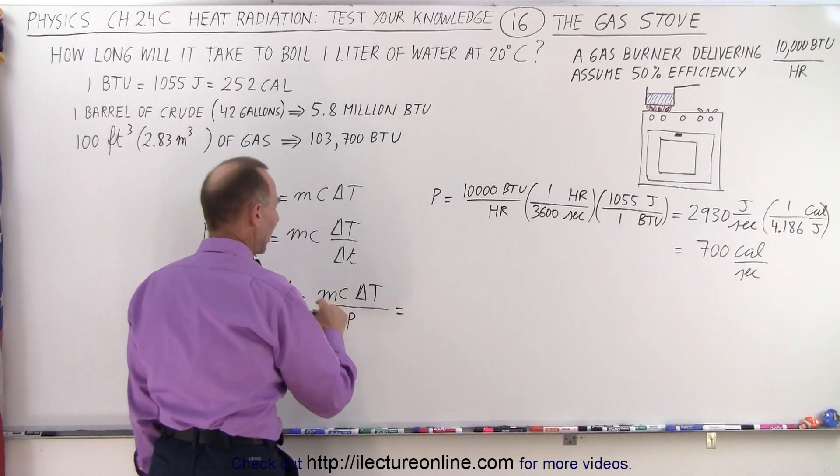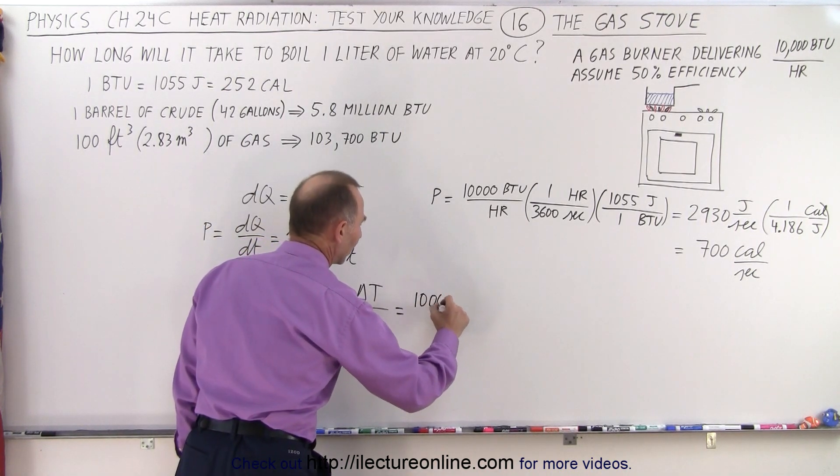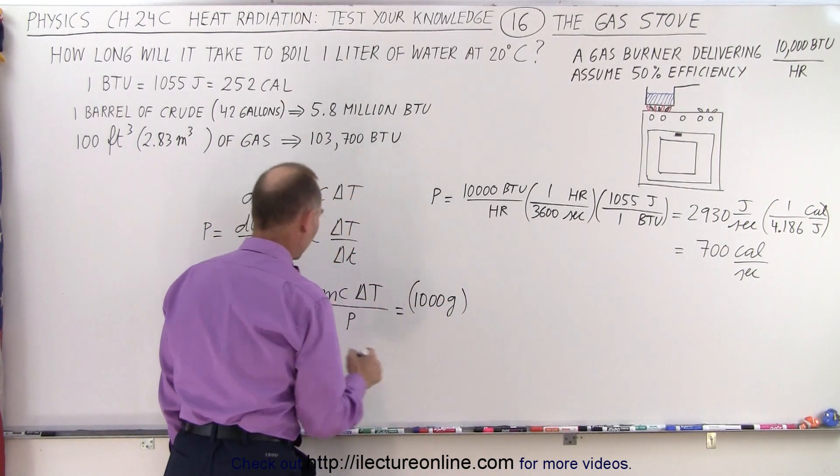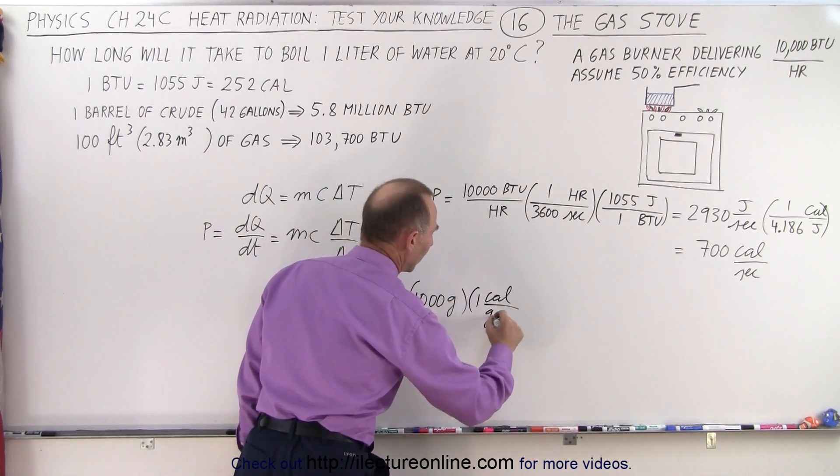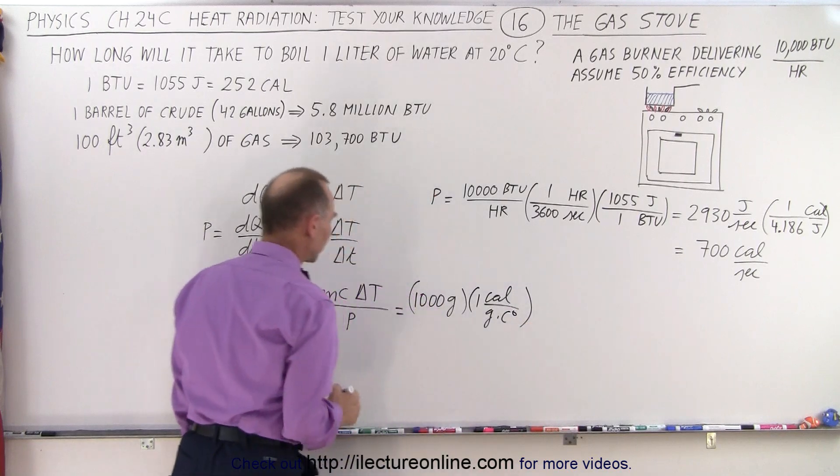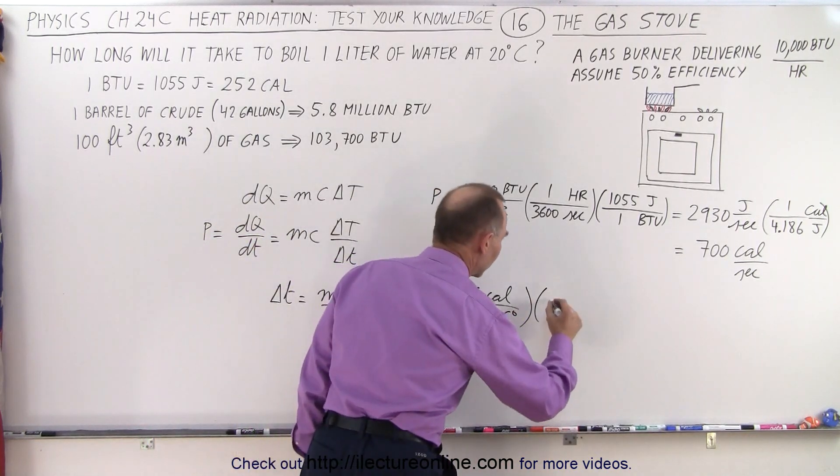So, this is equal to the mass of the water, 1,000 grams. One liter has a mass of 1,000 grams. C, in terms of calories, is 1 calorie per gram per centigrade degree. Delta T would be 80 centigrade degrees.